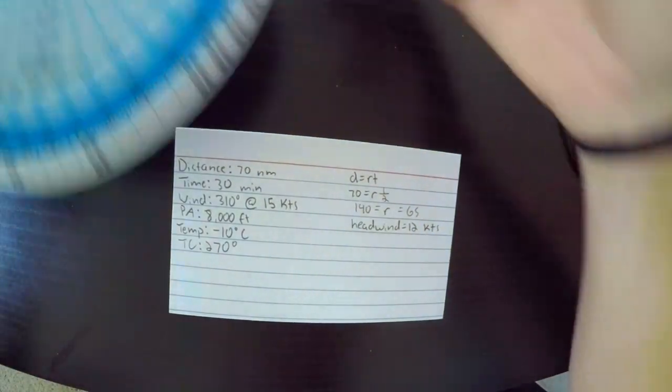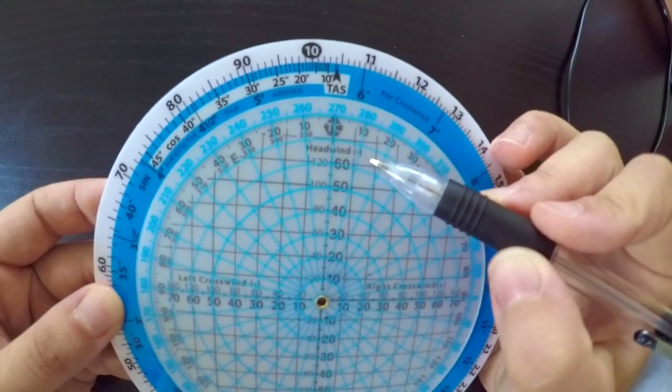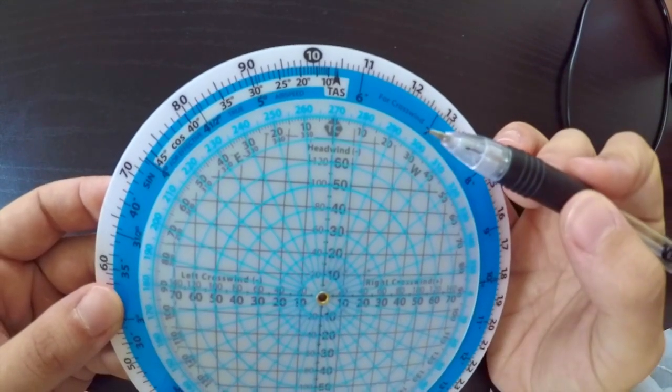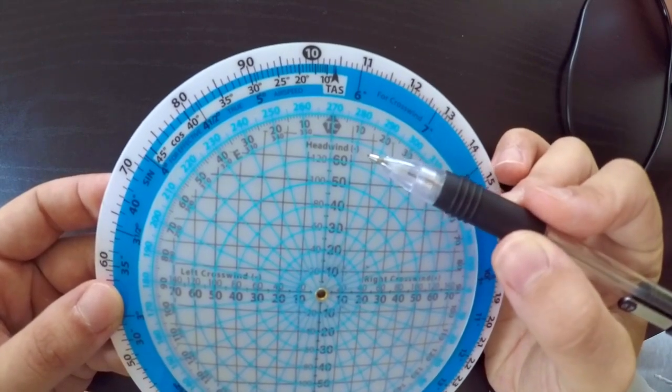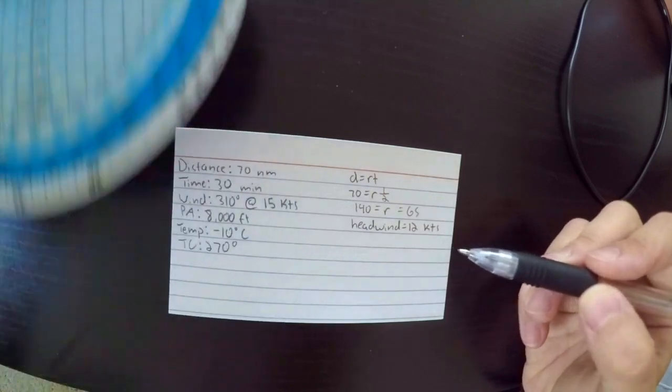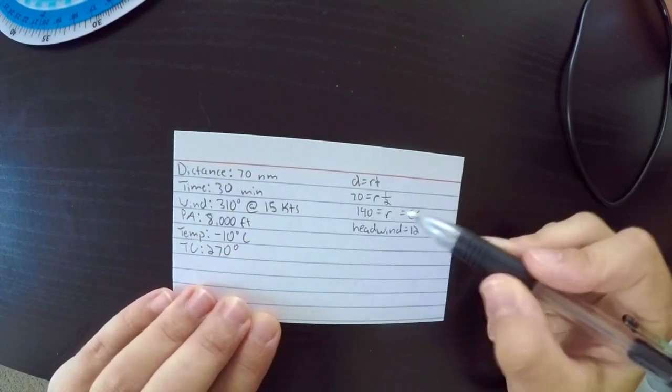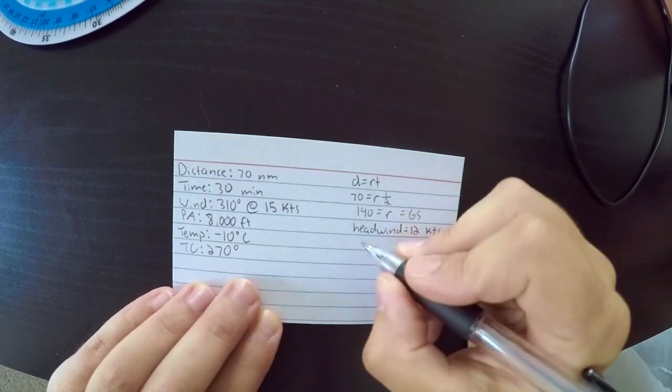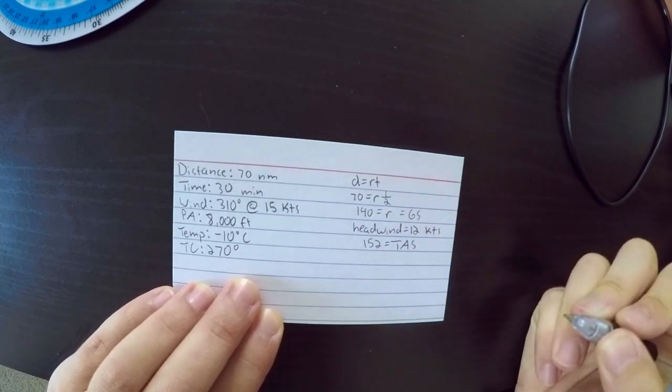So we said our headwind component is about 12 knots. Now, you might have noticed that there's a little subtraction sign up here. So if you were converting from true airspeed to ground speed, you would subtract your headwind component, which in this case is 12. But we're doing the reverse, so we're going to add it. So our ground speed of 140 plus 12 knots is 152. And that is our true airspeed.